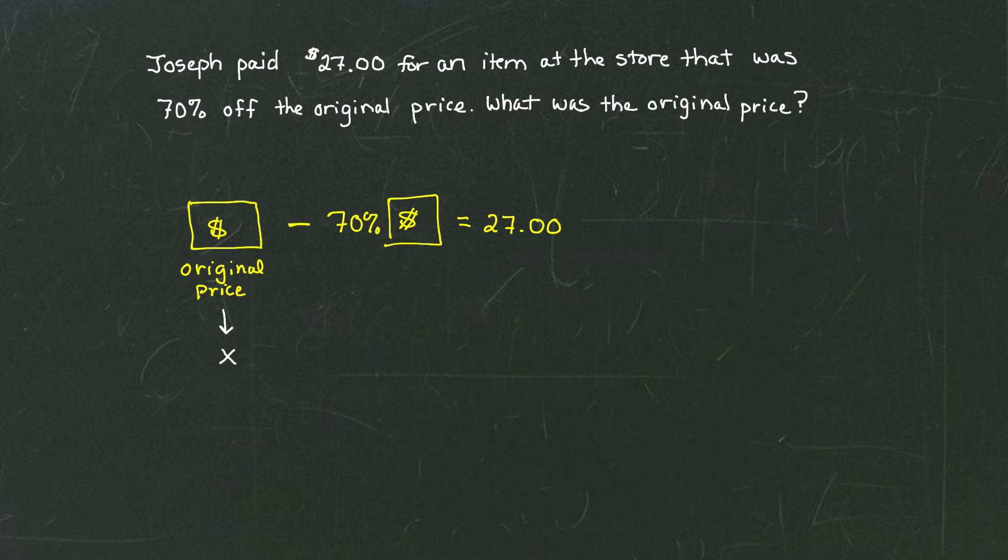Then we're taking 70% of that original price. And when we take a percent of something, we're multiplying. So 70% of means 0.70 times, and the original price was X, so that's 0.70X, and that equals 27, or $27.